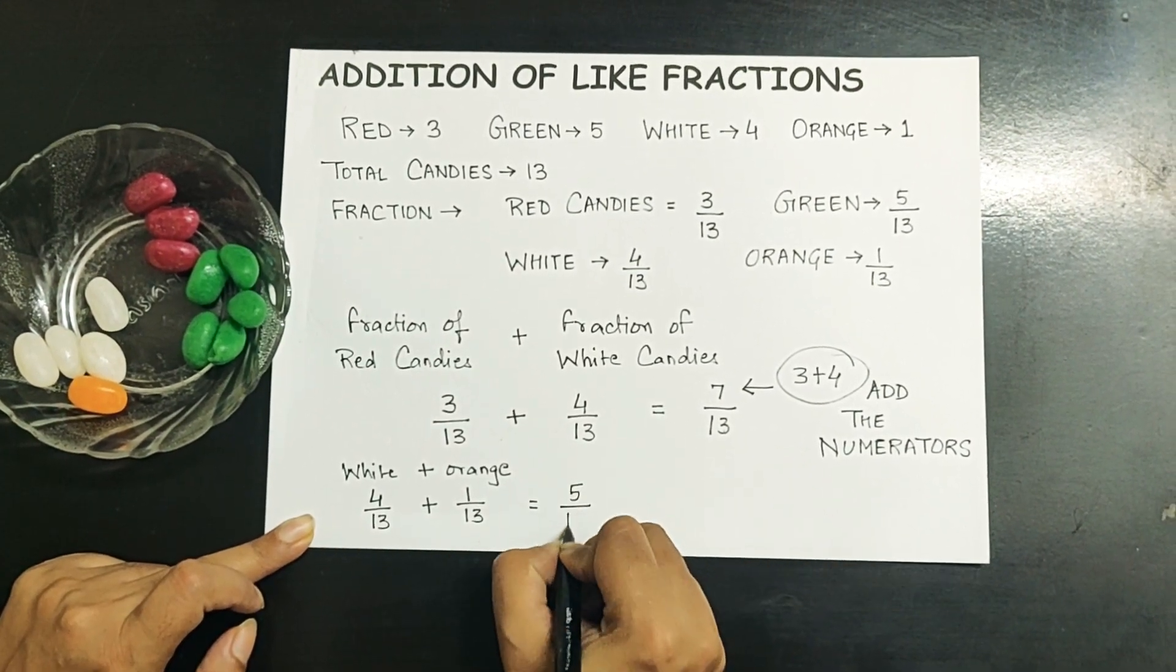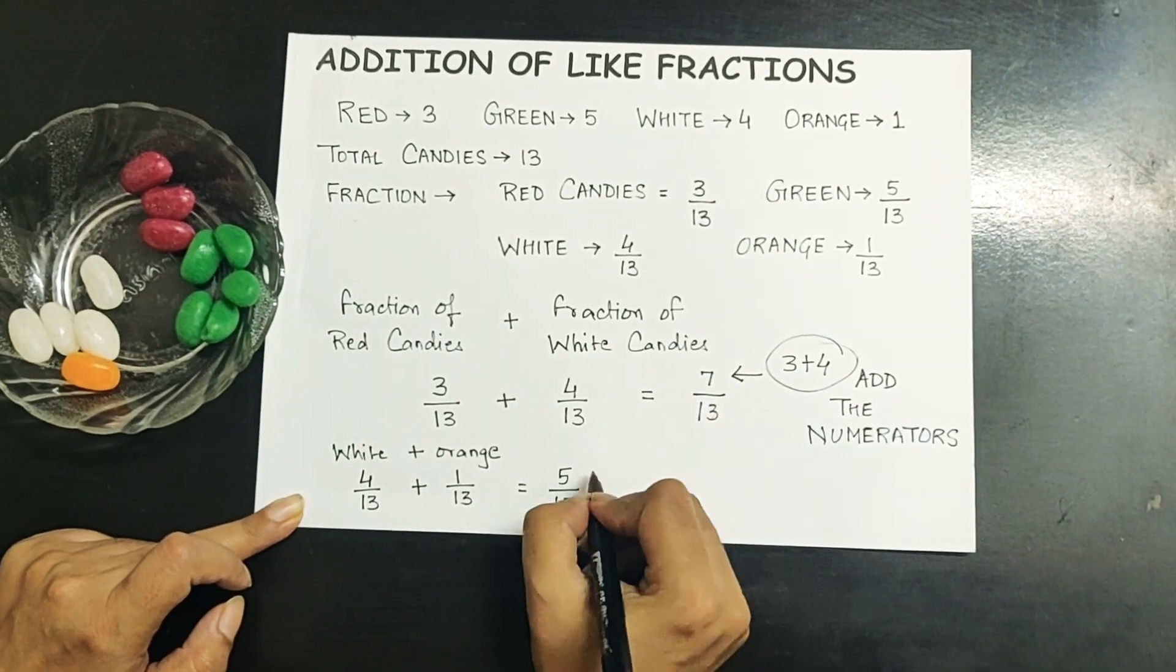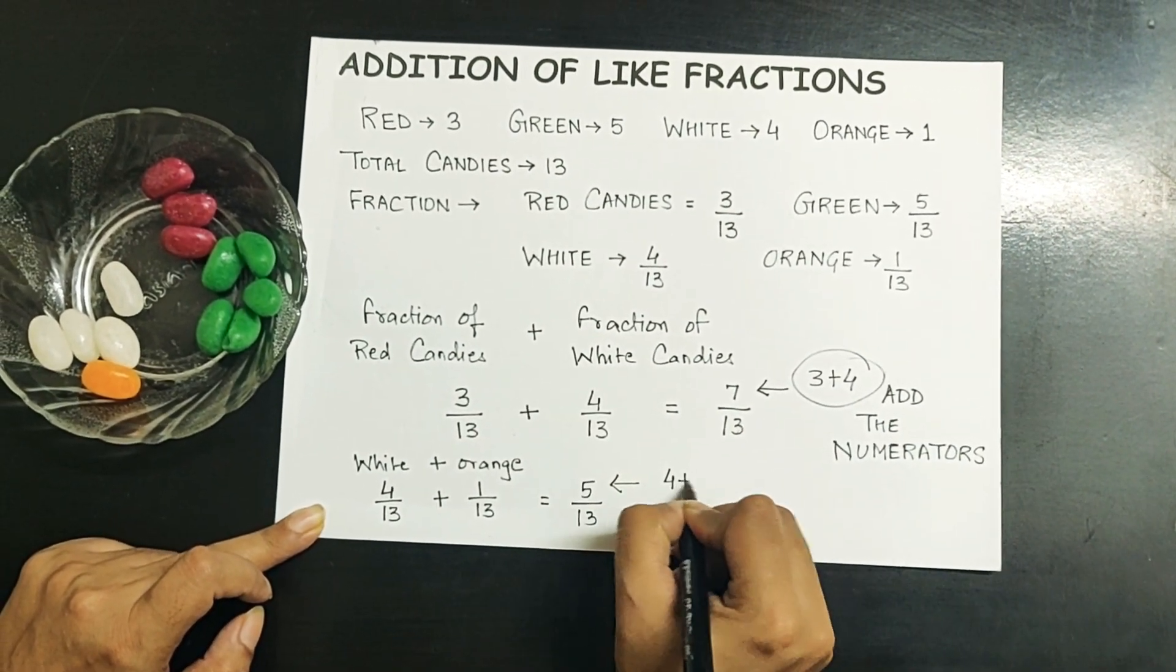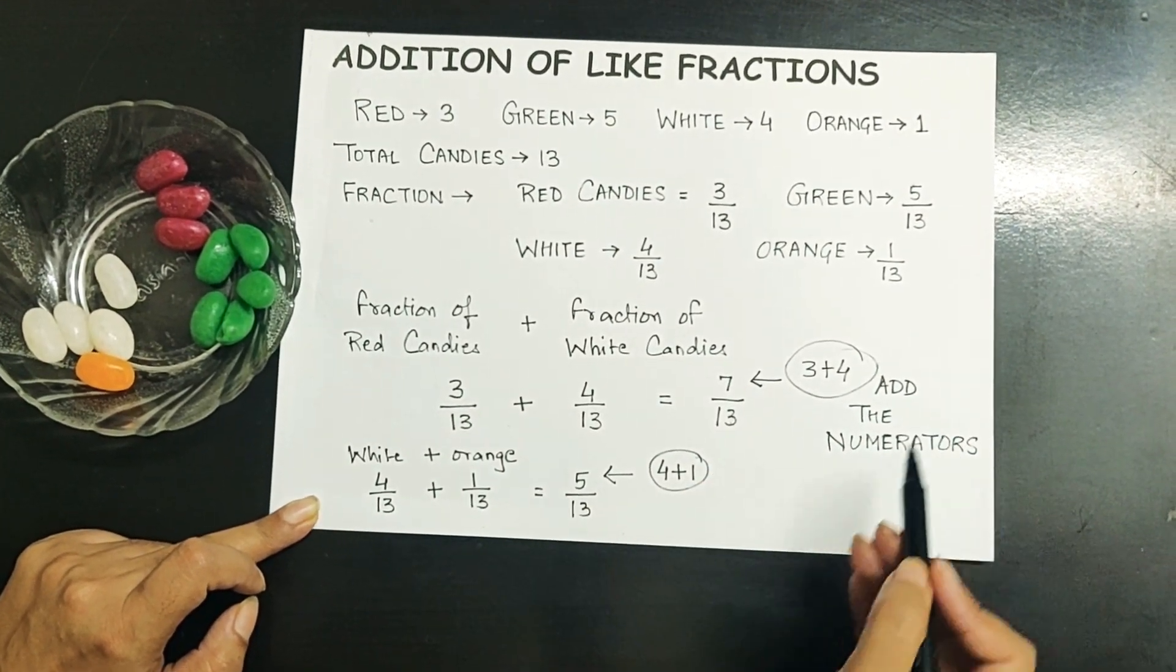Similarly, as we looked in the previous example, where does this 5 come from? It comes by adding the numerators, keeping the denominator same.